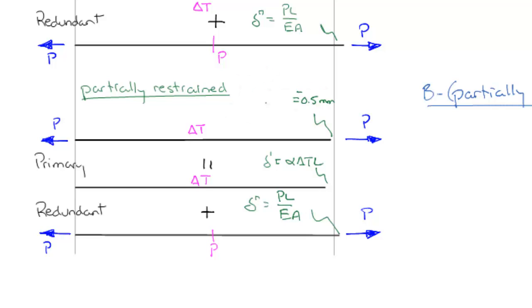We go to our compatibility equation, which we have at the top once more. Delta prime plus delta double prime equals negative 0.5 millimeters.